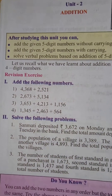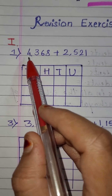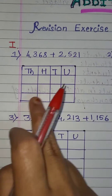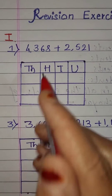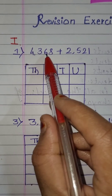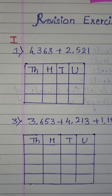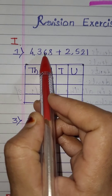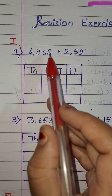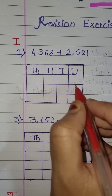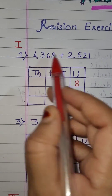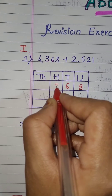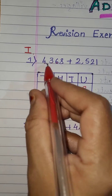We will solve the first one. Already written: 4368 plus 2521. This is the place value chart. We have to arrange these numbers into the place value chart. Starting from the right side — ones, tens, hundreds, thousands. So 8 is in the units place, 6 in the tens place, 3 in the hundreds place, and 4 in the thousands place.